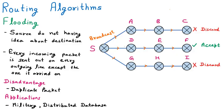If the destination is present, it will accept the packet. One important point: flooding is applied only when the source has no idea about the destination. That is the routing algorithm called flooding.